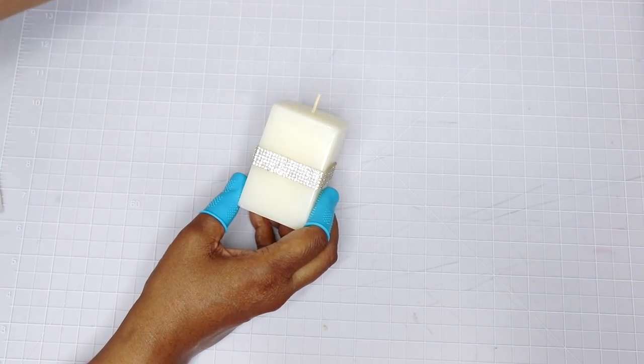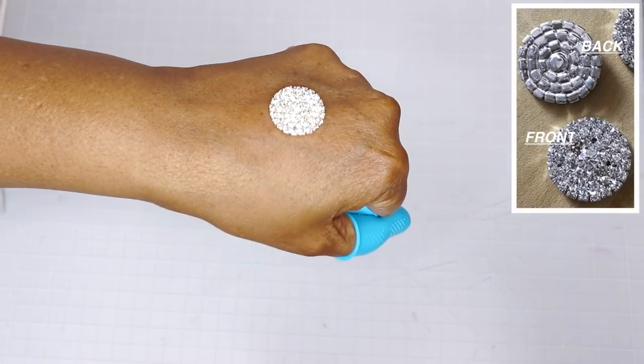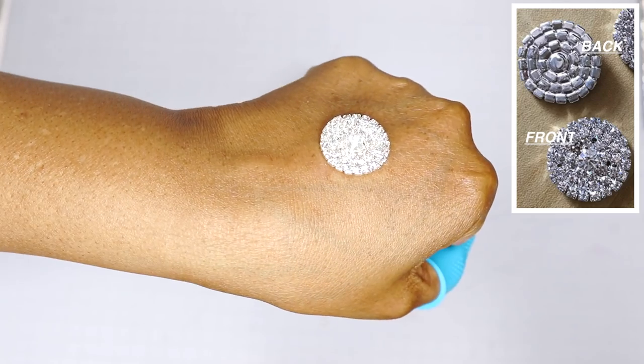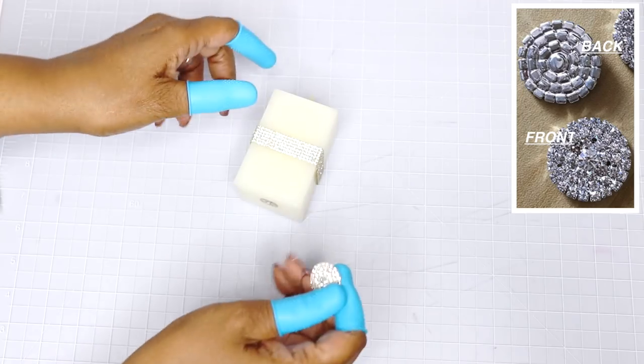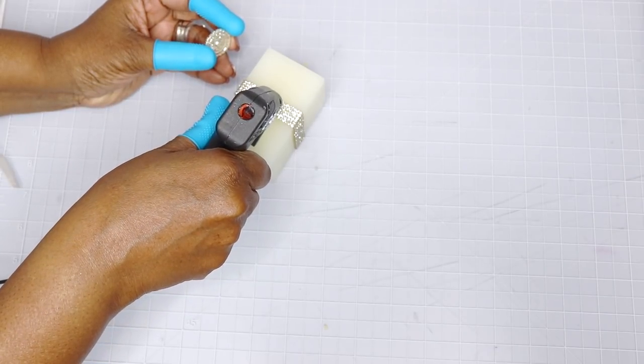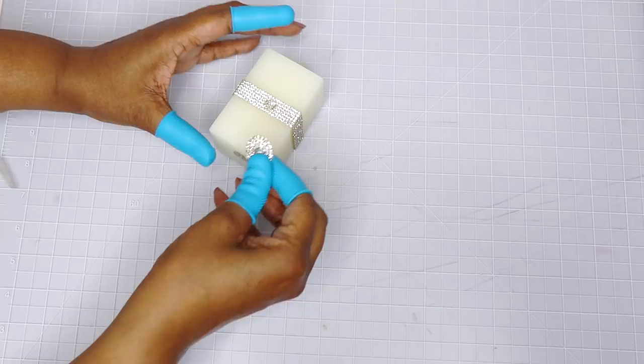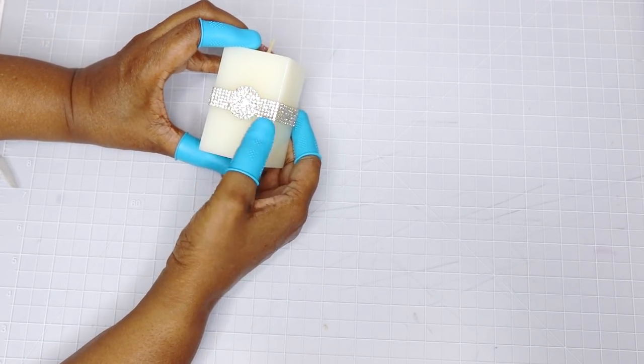Now what I'm going to do is apply this crystal embellishment that I picked up from Amazon. I bought about 20 of these and they averaged about seven cents per embellishment, so that was really a great deal and I'll leave the link if you're interested.